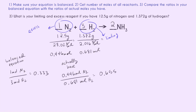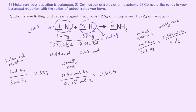Now doing the other ratio method to confirm. Setting up a proportion using the balanced equation lets us solve for how much H₂ we'd actually need to completely use up the N₂. Solving, we get 1.338 moles of H₂ needed. We only have 0.681 moles — we would need almost twice as much to use up all the nitrogen. So again, H₂ is the limiting reagent; we don't have enough to use up the N₂, and N₂ is the excess because we won't even use all 0.446 moles.